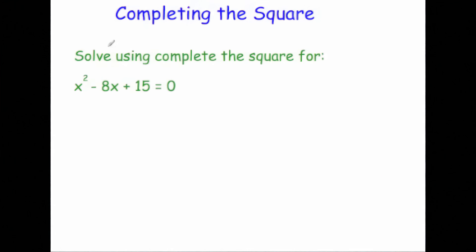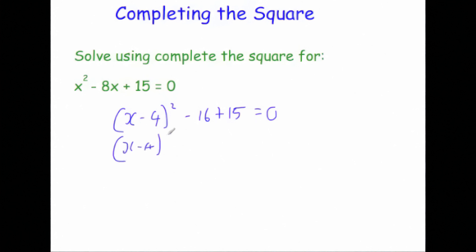Now let's look at why completing the square is useful — we can use it to solve quadratics. Take x squared minus 8x plus 15 equals 0. Completing the square: x minus 4 squared, minus 16 plus 15 equals 0. That simplifies to x minus 4 squared minus 1 equals 0, so x minus 4 squared equals 1.